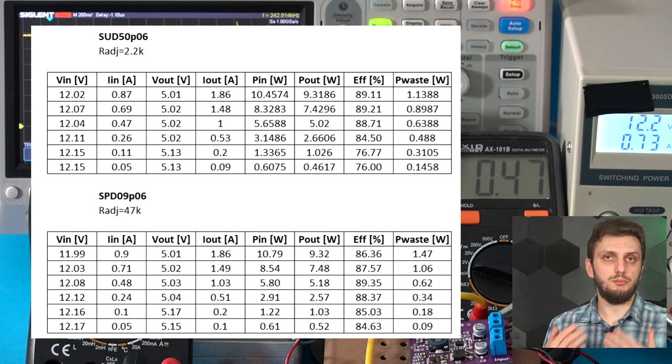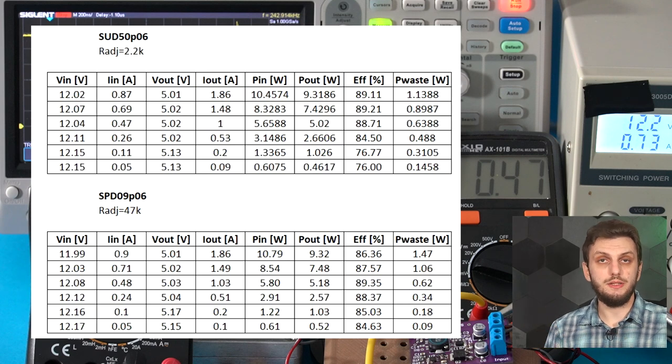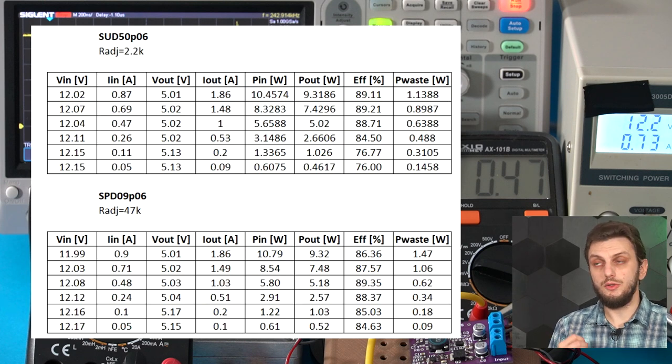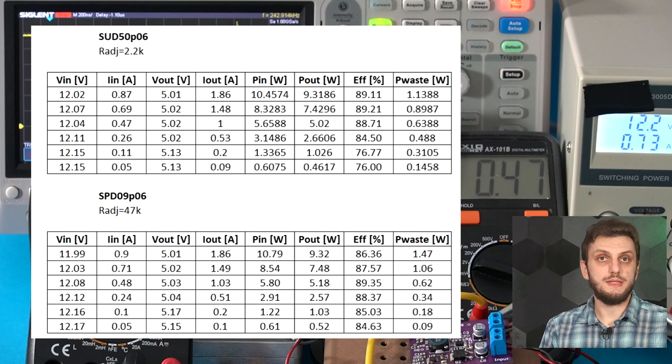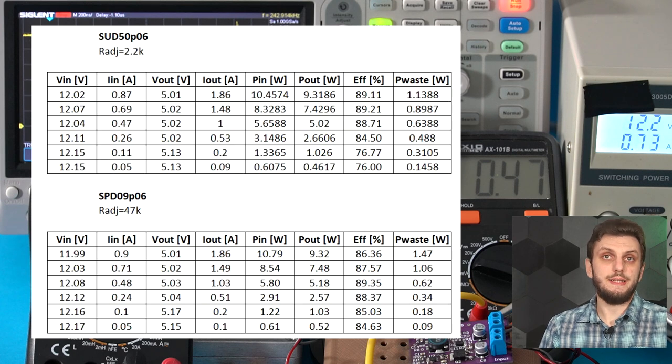So what we can see is that both transistors have similar efficiency levels at the 1A point. At higher currents, the 50P09 is more efficient because of its lower on resistance, whereas at low currents the other transistor, the 09P06 is better, because of the various lower capacitances. So even though these results are not exactly the same as in the simulation, they are quite close. In the end, for this particular power supply, neither transistor is the best. You could probably get better results with a transistor that has more than 20 milliohms of on resistance, but with capacitances and switching speeds higher than the 09P06.